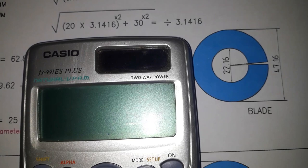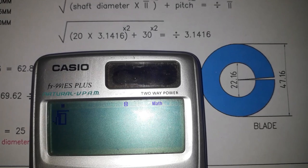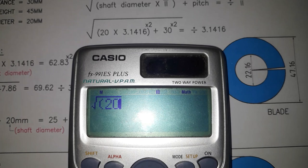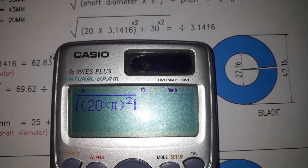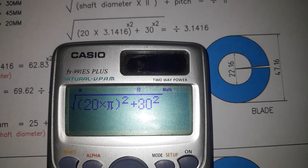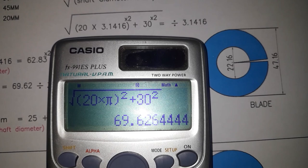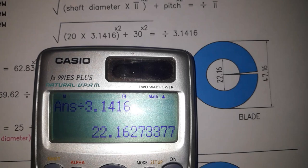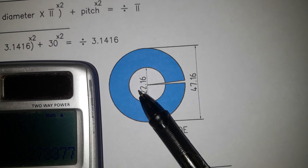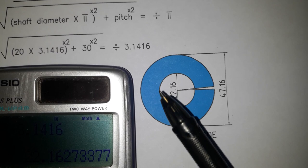Square root, 20 multiplied by pi, pi squared, plus 30 squared, then divided by 3.1416. So the answer is 22.16mm. This is the inside diameter of the blade.